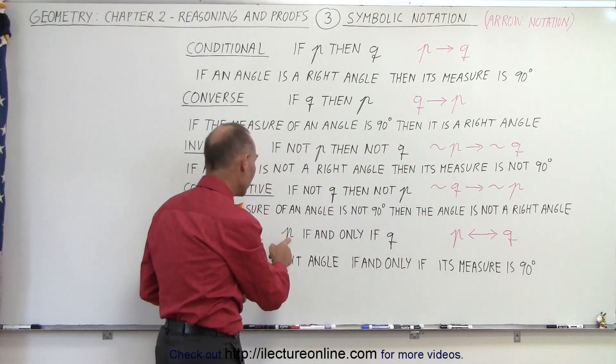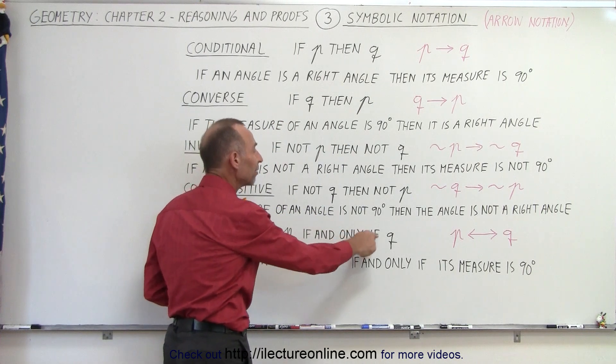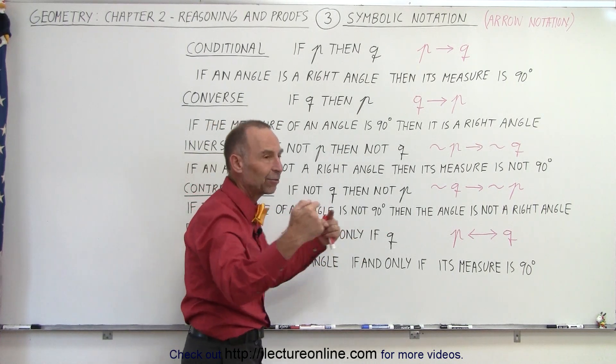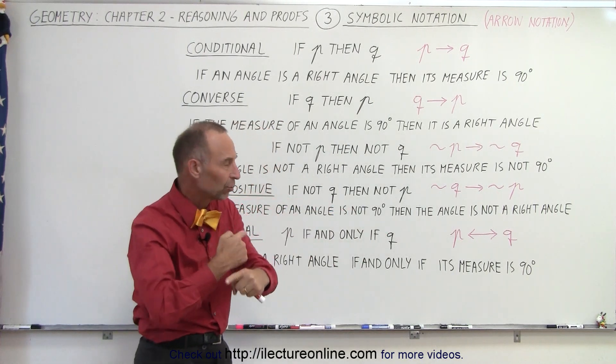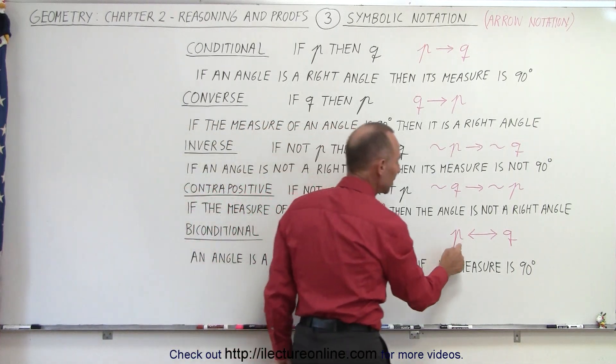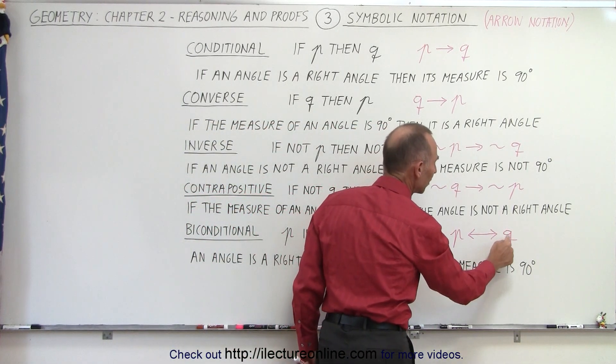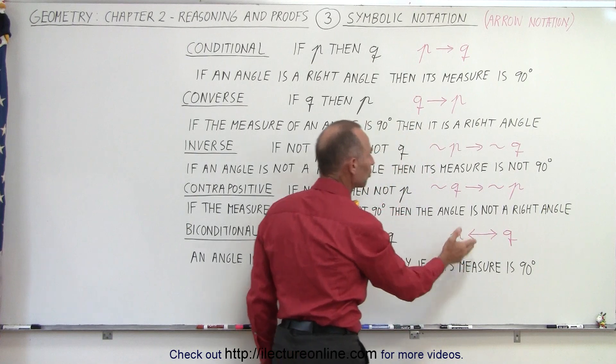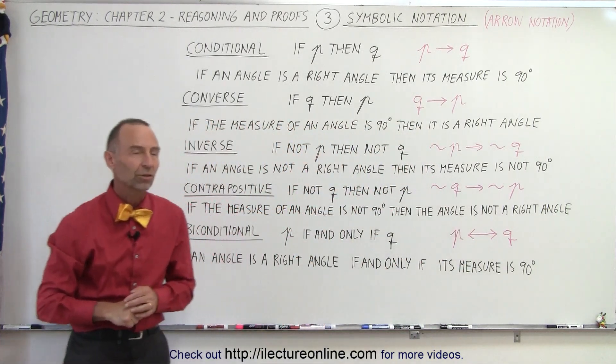And that means if P if and only if Q is true, that means that we have the bi-directional condition must be true in both directions. That if P is true then Q must be true and if Q is true then P must be true. And now we can say it is a bi-directional condition.